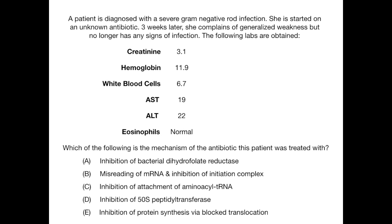A patient is diagnosed with a severe gram-negative rod infection. She is started on an unknown antibiotic. Three weeks later, she complains of generalized weakness, but no longer has any signs of infection.